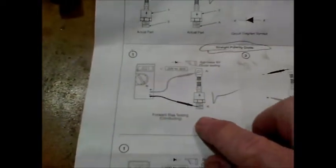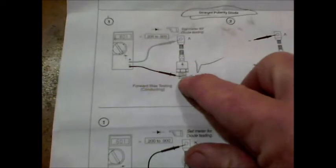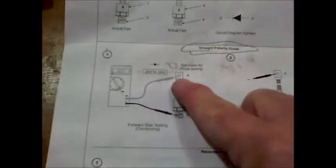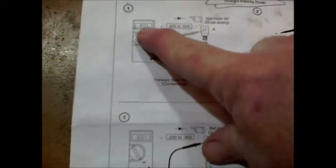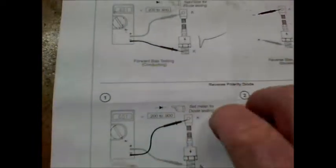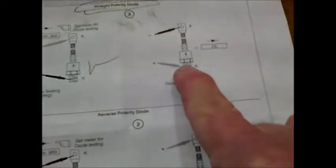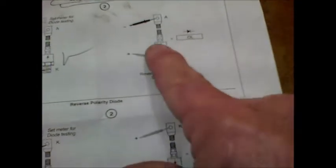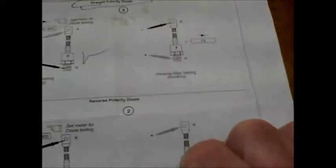Okay, shows it right here. Black to the bottom, red to the top, you get a reading - straight polarity. And if you reverse that you get no reading, that's a good diode and that's a straight polarity diode.